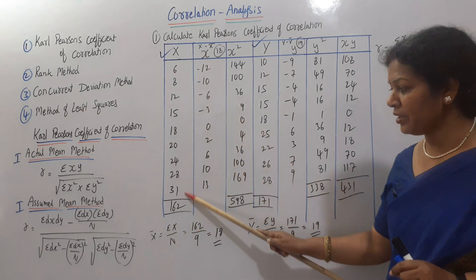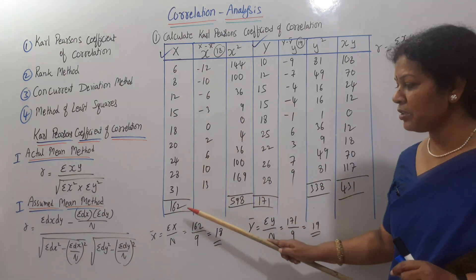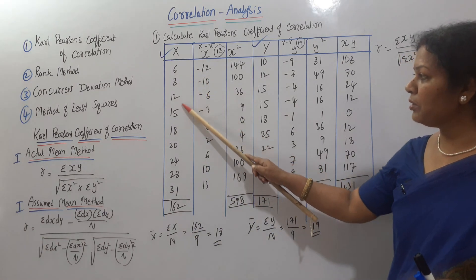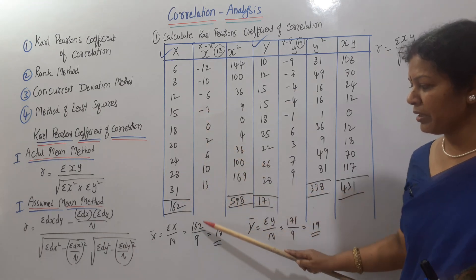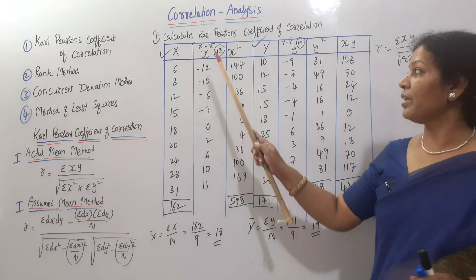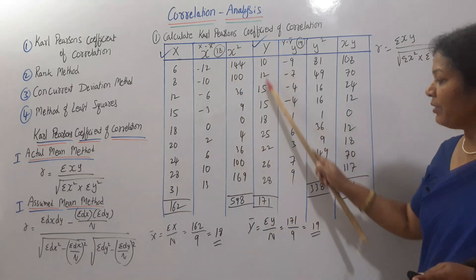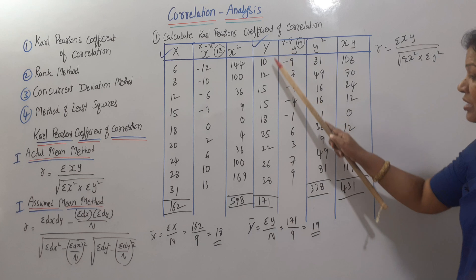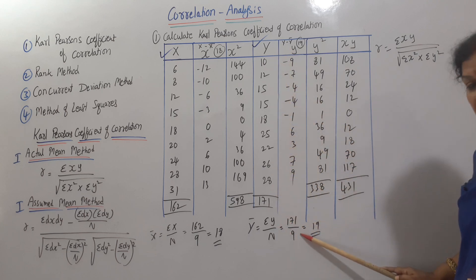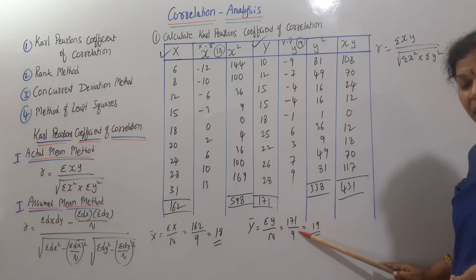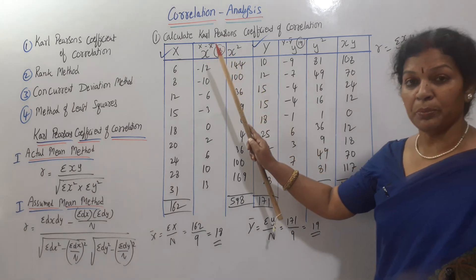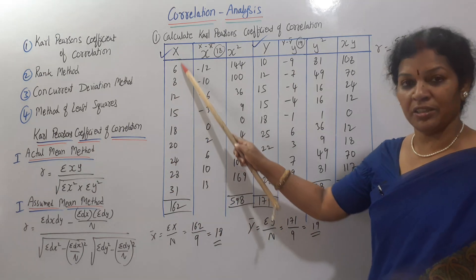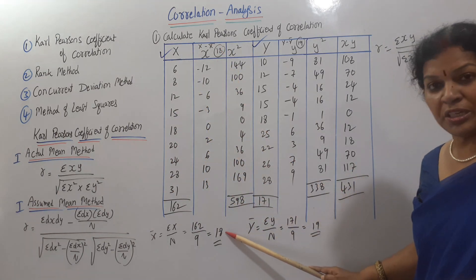x-bar is equal to sigma x total divided by n. The total is 162, and n is 9 observations. So 162 divided by 9 gives x-bar equal to 18. Similarly, y-bar is equal to sigma y total divided by n, which is 171 divided by 9, giving y-bar equal to 19.